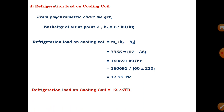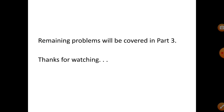The calculation will be correct only if the psychrometric chart processes are plotted correctly and the property values taken from the plotted points are accurate. This is how you solve problems of cooling load estimation. This was one problem solved today. Tomorrow we will take one more problem where the arrangement of the cooling coil and mixing chamber will be changed, and again we will use the psychrometric chart to get the required values.